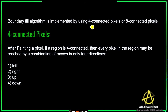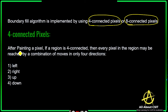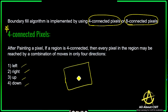The boundary fill algorithm is implemented by using a four-connected pixel or eight-connected pixels. If you take the four-connected pixels, after painting a pixel, if a region is four-connected, then every pixel in the region may be reached by a combination of moves in four directions: left, right, up, and down — that is, south, north, east, west.